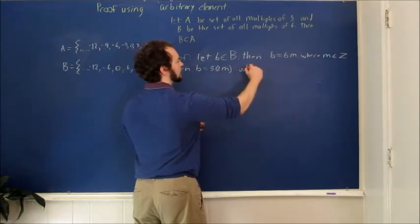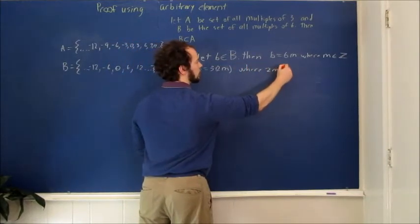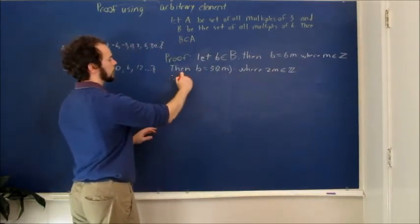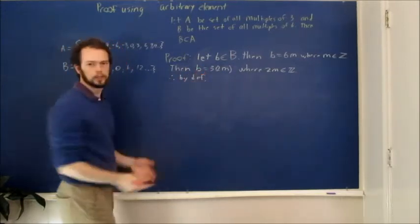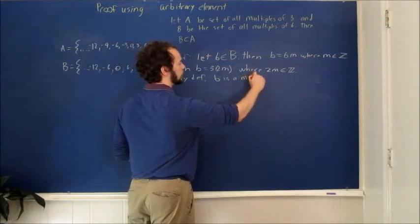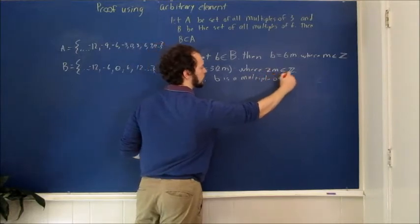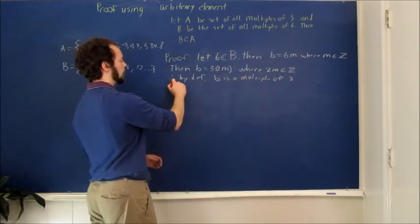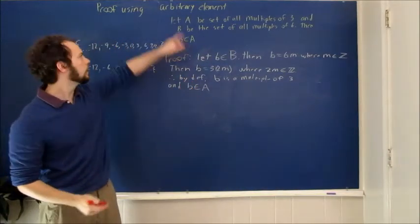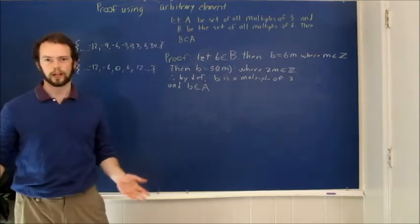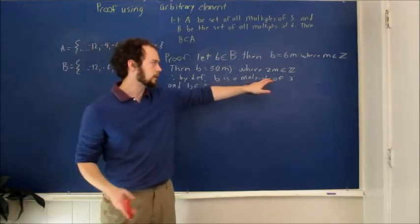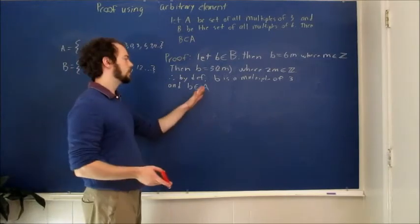And since 2m is also going to be an integer, that means b is a multiple of 3. Therefore, by definition, b is a multiple of 3. So b must be an element of this set A, the set of all multiples of 3. We showed that b must be a multiple of 3, so it must be in set A.